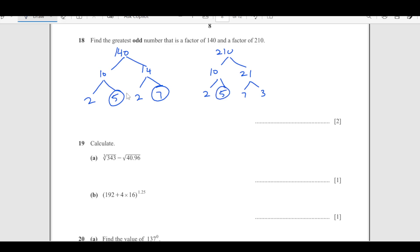5 and 7, here also 5 and 7. So GCF is going to be 5 times 7, which is 35. 35 is the final answer.